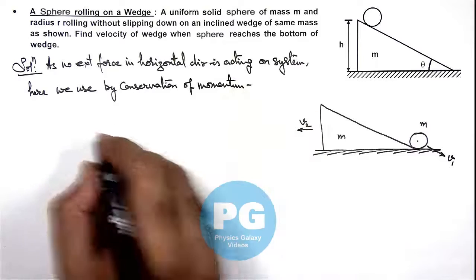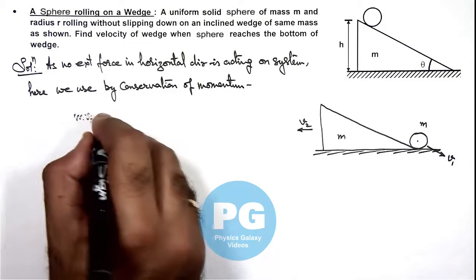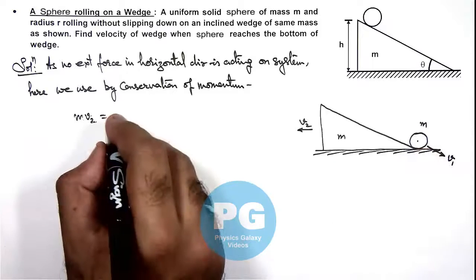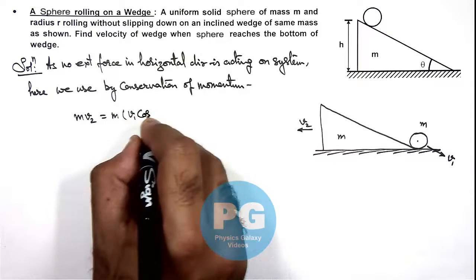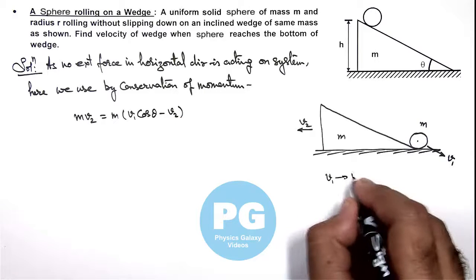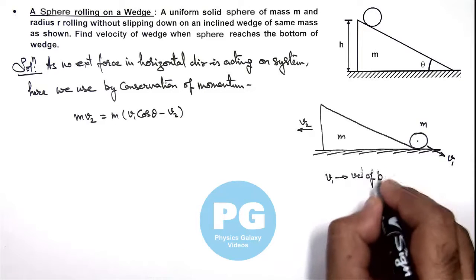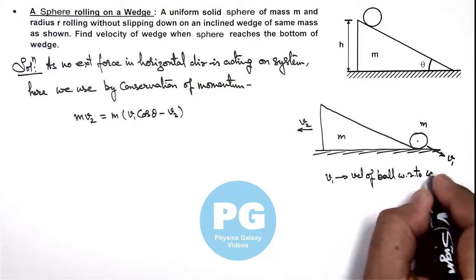As here we can write, toward left the wedge has attained a momentum mv2 and toward right the ball has attained a momentum m times v1 cos theta minus v2, because here we have taken the v1 as velocity of ball with respect to wedge.